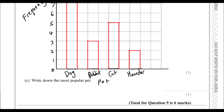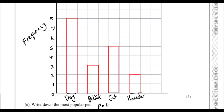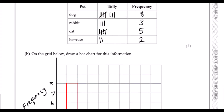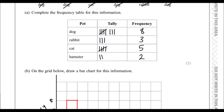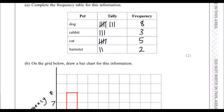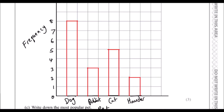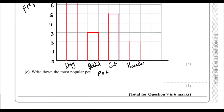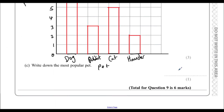Write down the most popular pet. Dog was chosen eight times, which is more than the others, so dog is the most popular pet.